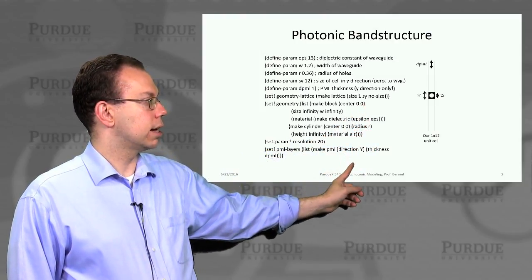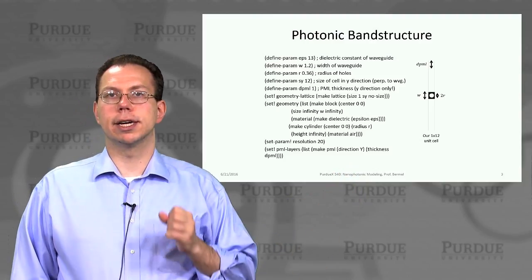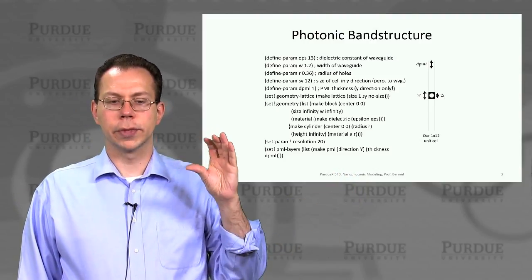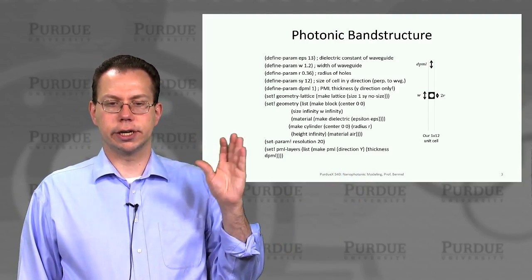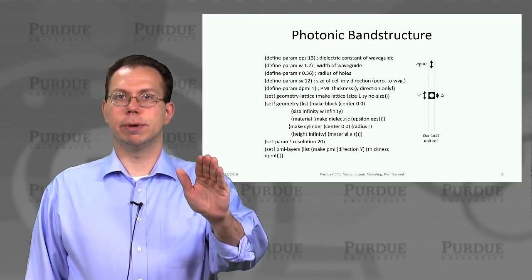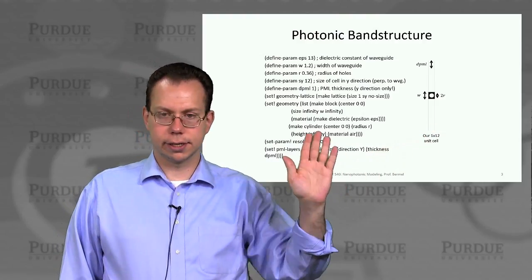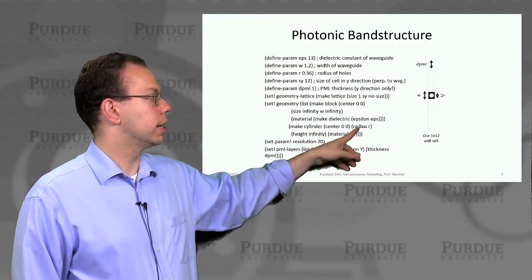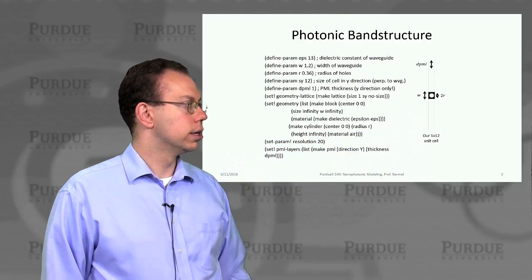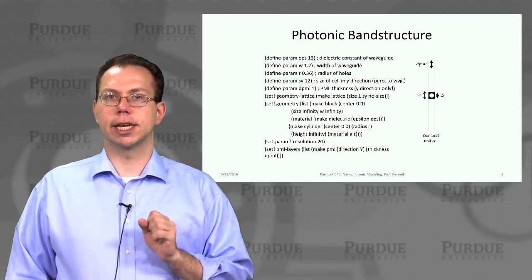And then when we set up the PML layers, the PML layers actually ensure that they're only in the y direction. So in the x direction, it just repeats over and over again. So although you only see one subunit, you can actually assume infinite number that are repeated in the x direction, both in minus and plus x.